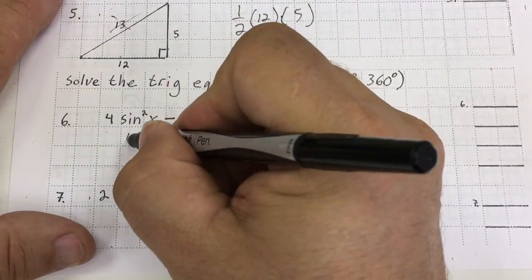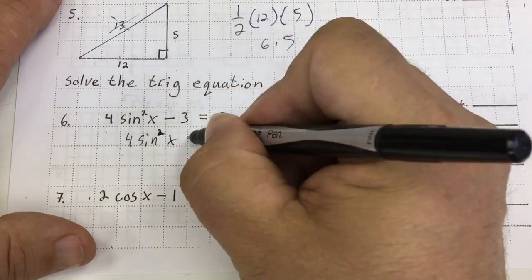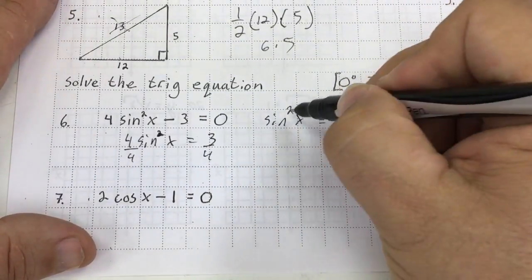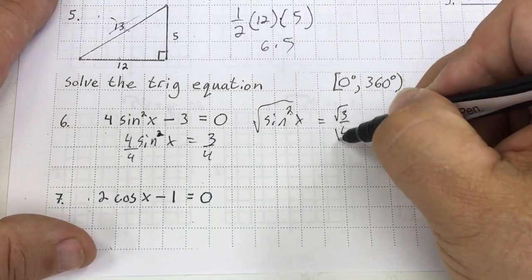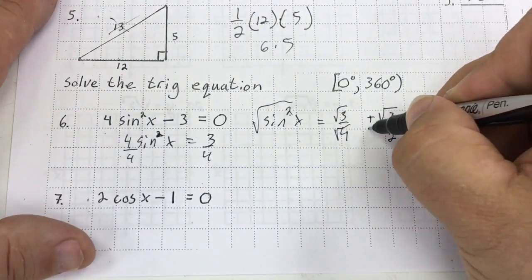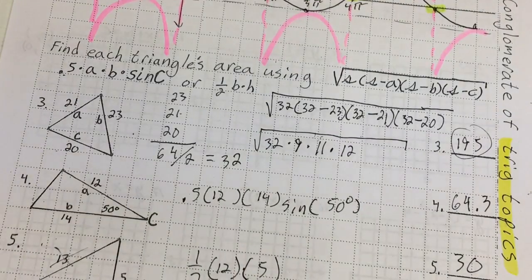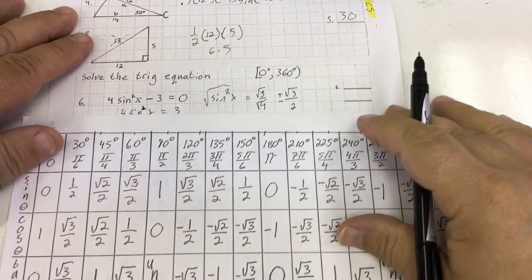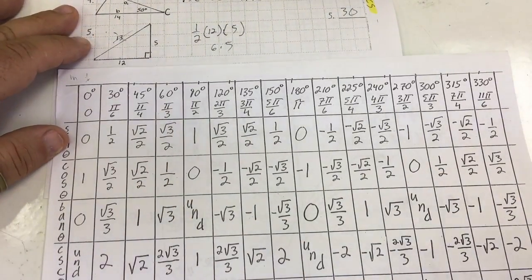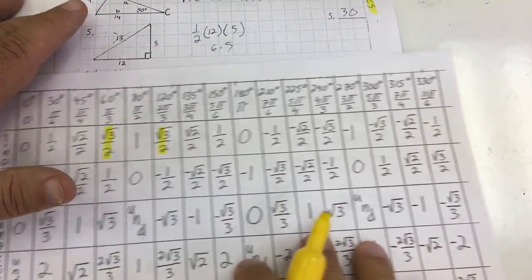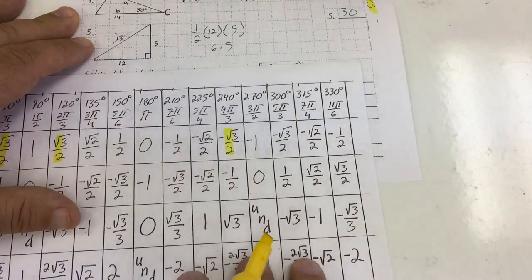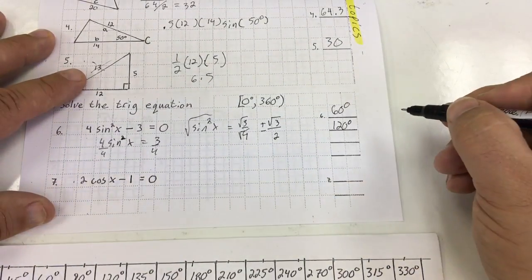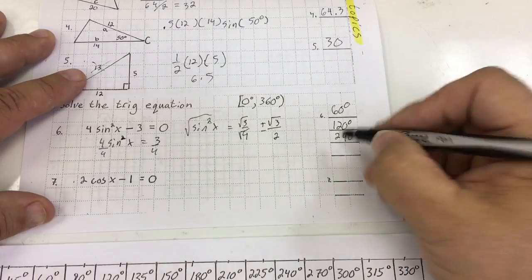Solving the trig equation, I'm going to add 3 to both sides: 4 sine squared x equals 3. I divide both sides by 4, giving me sine squared x equals 3 over 4. To get rid of that square, I square root both sides — this equals the square root of 3 over 2, but I add a plus or minus. I need to find on my table where sine is plus or minus root 3 over 2: that's at 60 degrees, 120 degrees, 240 degrees, and 300 degrees.